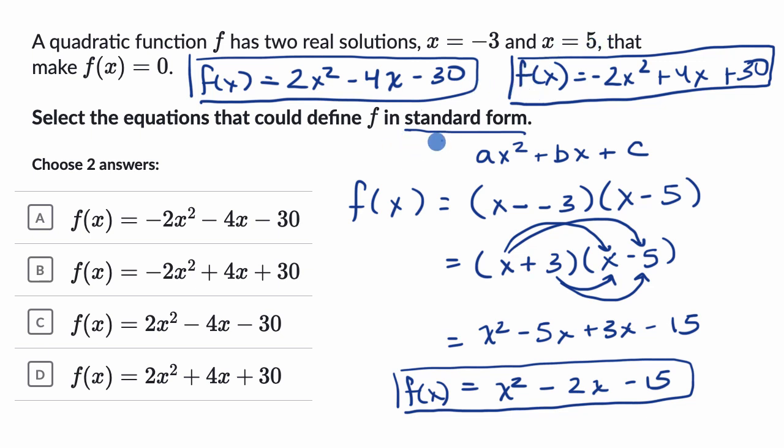So now let's see which choices match up. Two x squared minus four x minus 30, I like this one right here. And the negative two x squared plus four x plus 30, I like this one here as well. So I'm done.